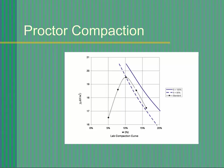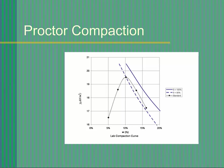Ideally, one point should be near optimum moisture content, and two points should be above and two below optimum. We will attempt to obtain the first data point near optimum moisture content. In a dry soil, we achieve better compaction by first adding water to raise its moisture content to near optimum. This water provides lubrication, softens clay bonds, and reduces surface tension within the soil.